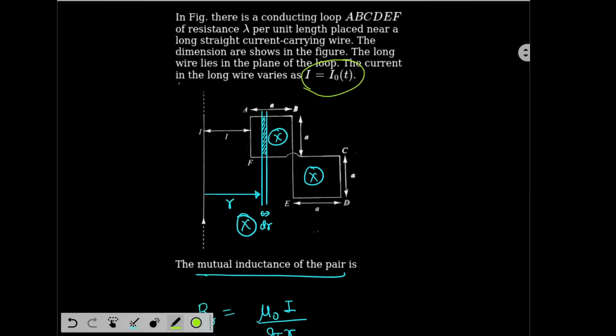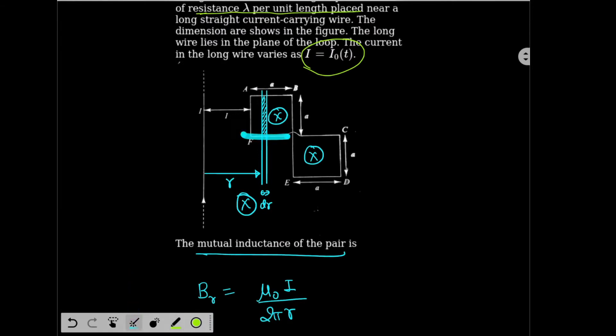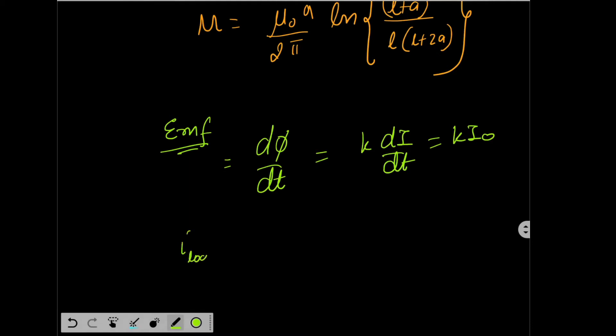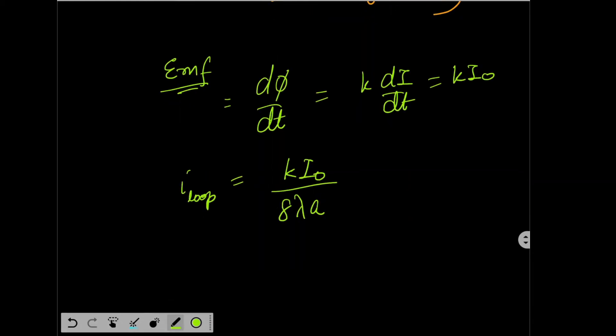And therefore first of all, what is the resistance? Resistance is lambda per unit length. So total length is how much? For this square the length is 4A, for this square the length is 4A, so total length will be 8A. So total resistance is 8 lambda A. So the current in the loop, I of the loop, is K I0 by net resistance 8 lambda A. I found the current in the loop. I can find the rate of heat generation, I square. I loop square into 8 lambda A. This is rate of heat generation through the loop.